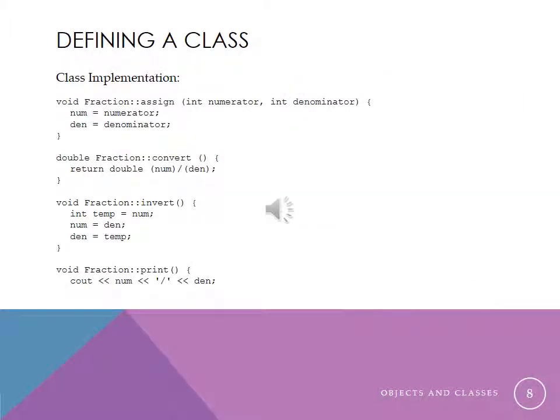And here's the code for those methods that we saw before in the class definition. We've got the assign function. It has two parameters. They are indeed value parameters. And all they do is take in values and assign those values to the private data of the object. We've got the convert function, which returns the result of the expression numerator divided by denominator. That's what we thought it would be. We've got the invert function, which is just a swap. It swaps numerator and denominator. And then we've got the print function that sends things to cout.